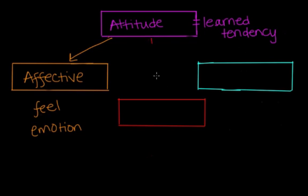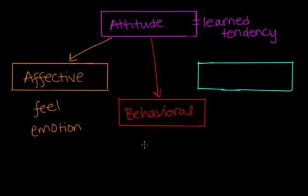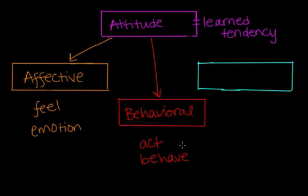The second component is called the behavioral component. The behavioral component is how we act or behave towards an object or a subject. We may say something like, I will avoid spiders and scream if I see one. The words avoid and scream indicate an action or a behavior, and that's going to influence our attitude.